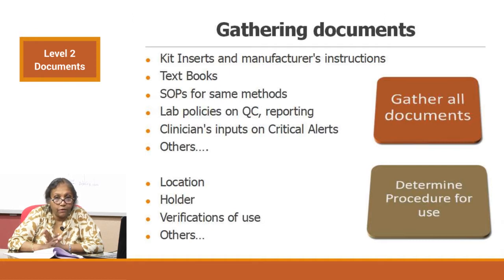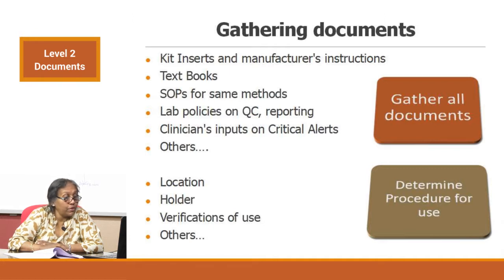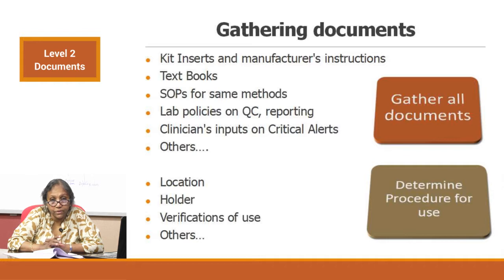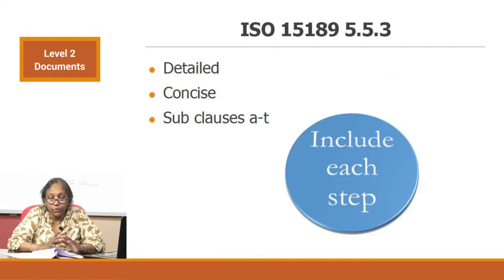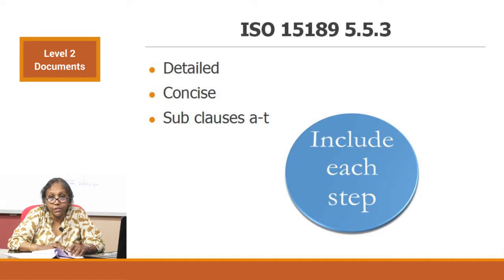Make sure you have all of them when sitting down to write your SOP. You also need to determine the procedure for use: where the SOP will be located, who will be the holder, and verifications of use. Verifications of use is a very good practice to ensure that people have read and understood the SOP. The most important aspect of writing an SOP is following ISO 15189 clause 5.5.3, which will make your SOP detailed yet concise — just follow sub-clauses A to T, which are 20 sub-points required in an SOP.